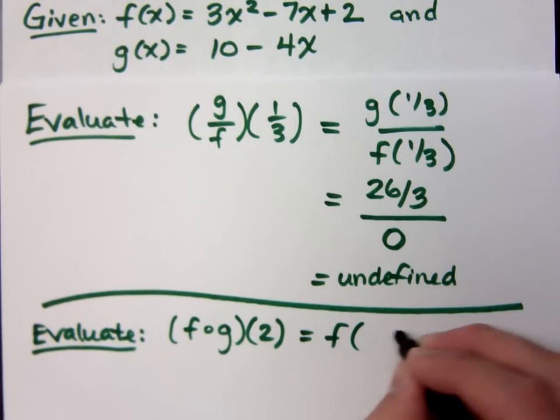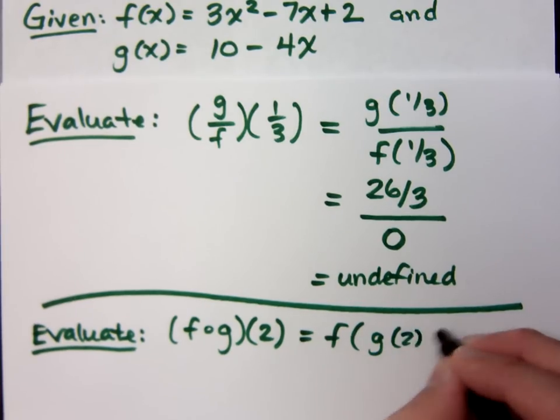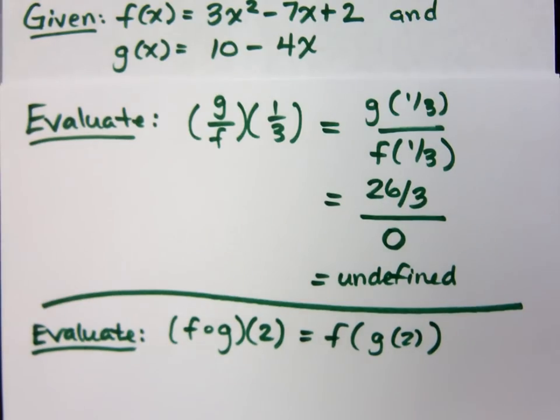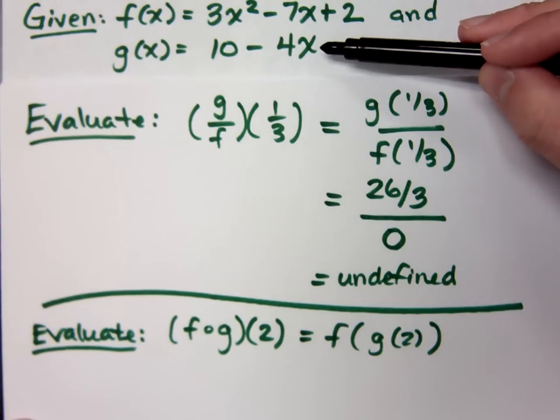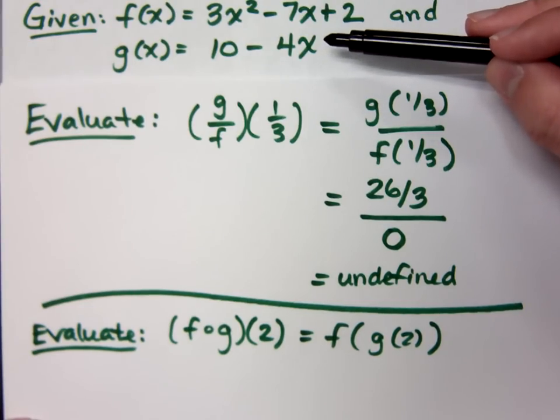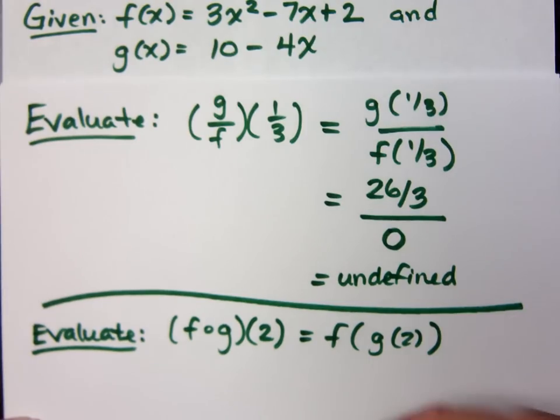That means I'm going to plug the 2 into my g first. Well, if I look up here, here's my g. If I plug in 2, we should be able to look at that and tell me that I get what? 2. I get 2. So, that means I have f of 2. And let me emphasize here that the reason that is, is because g of 2 evaluated to give you 2.